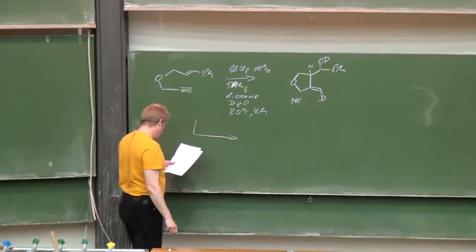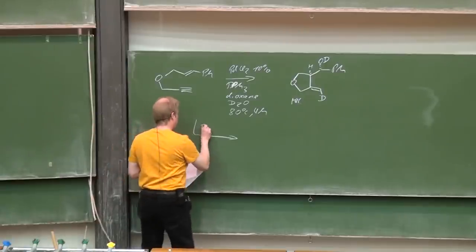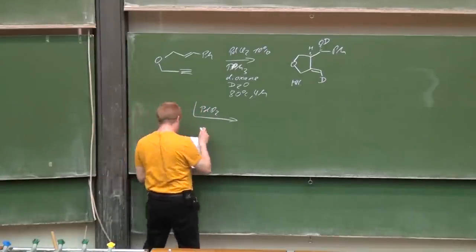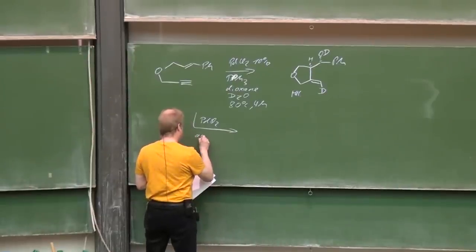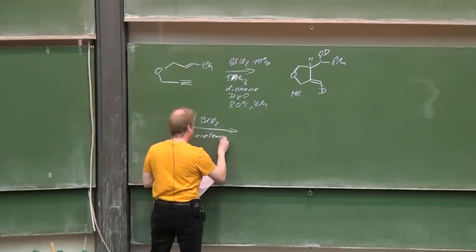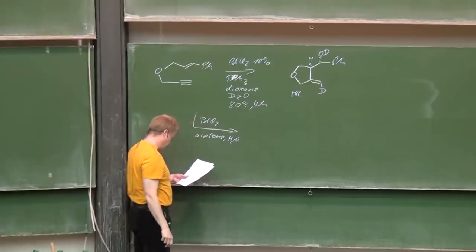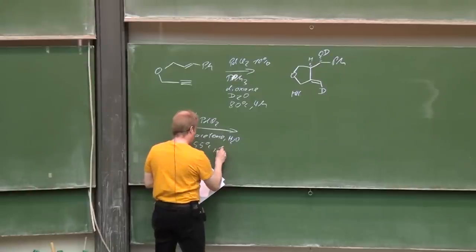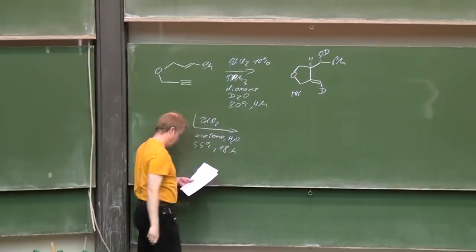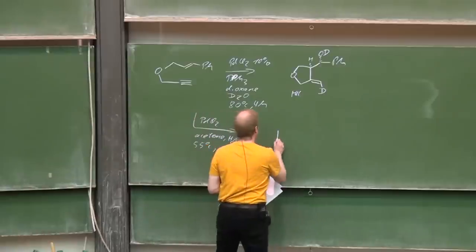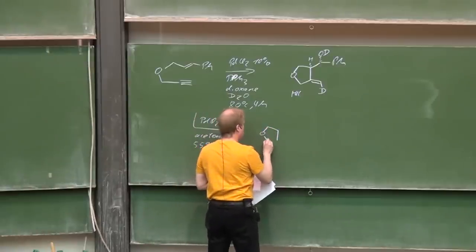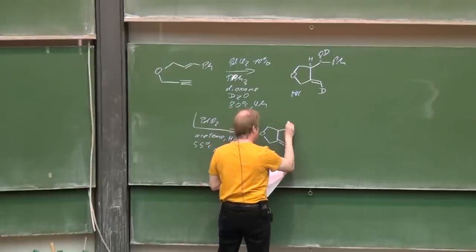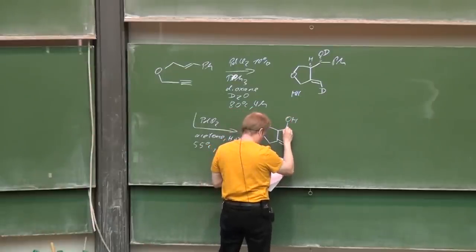Same starting material, somewhat different reaction conditions: palladium dichloride as catalyst, acetone with some water in it at 55 degrees reaction temperature, 18 hours reaction time. As the main product, the same one but not deuterated was found.